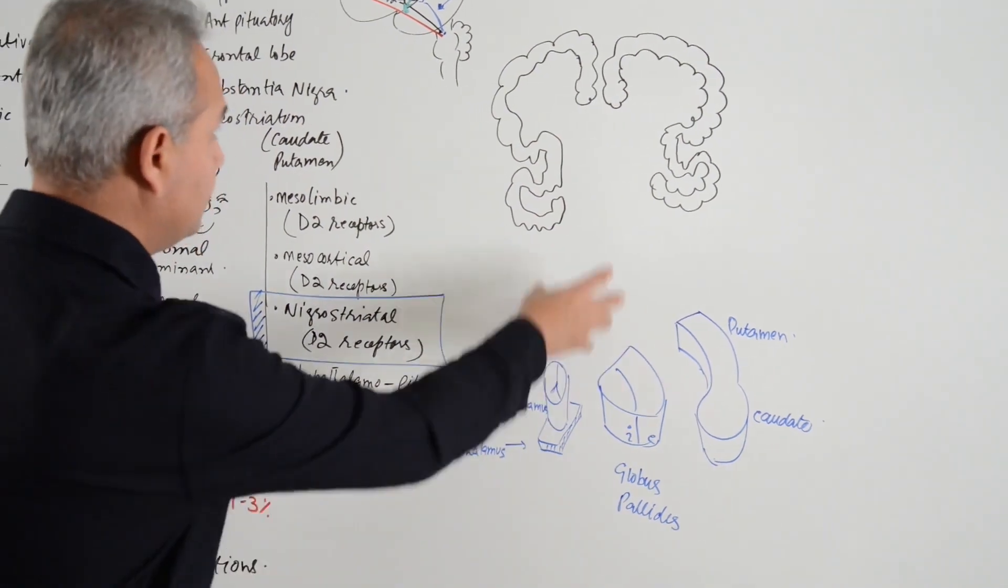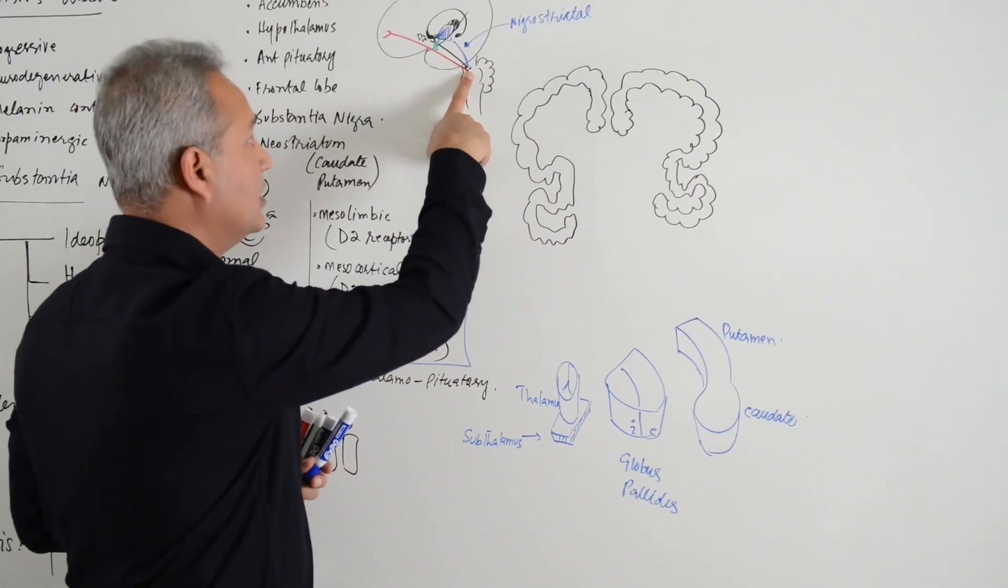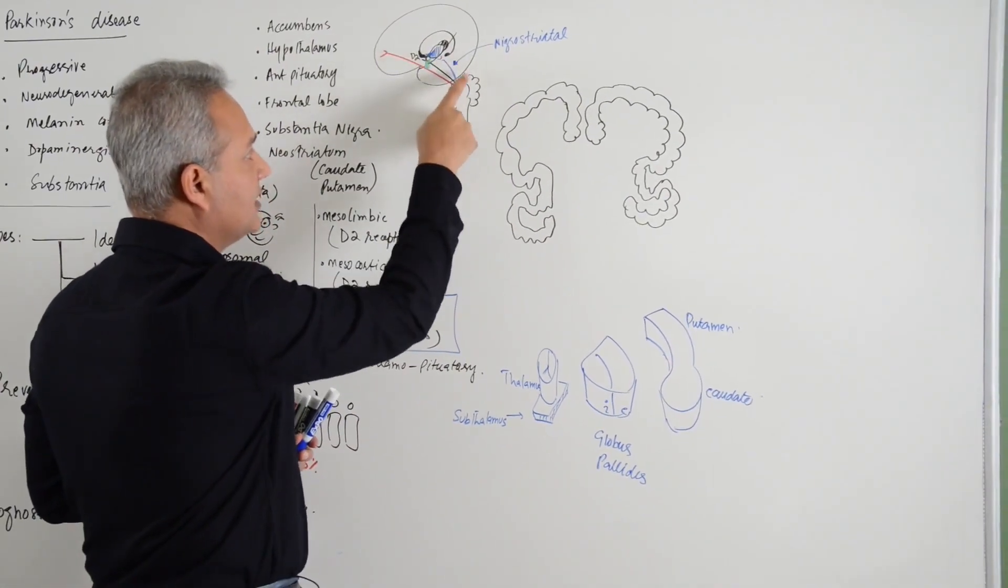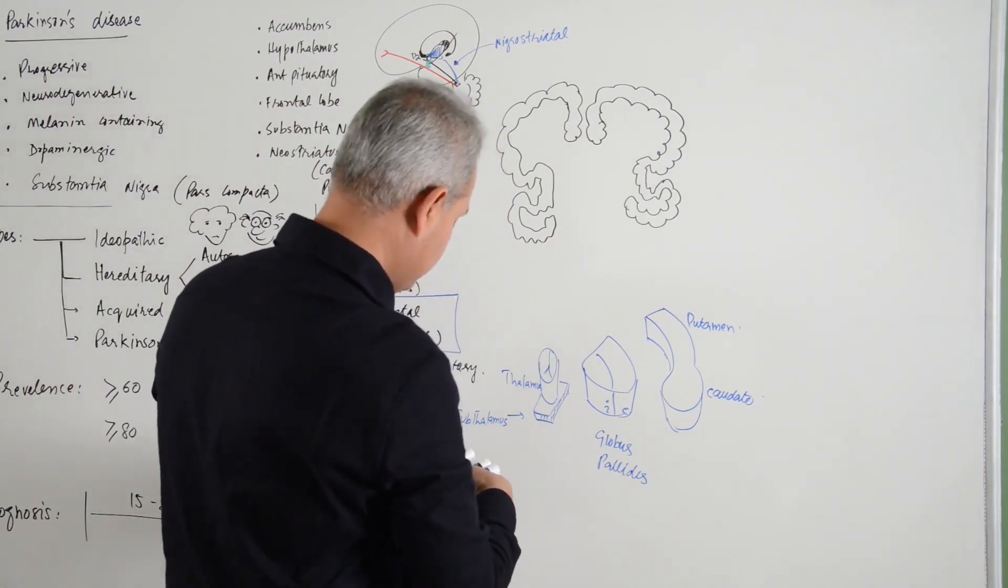Then below this we have to go to the substantia nigra as well. We have developed this area. Now we are going to make substantia nigra, so I am going to go to the midbrain level.